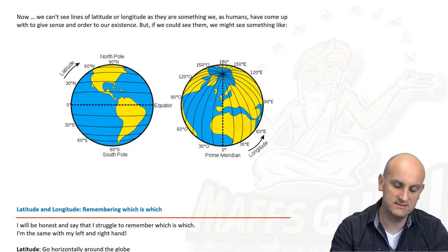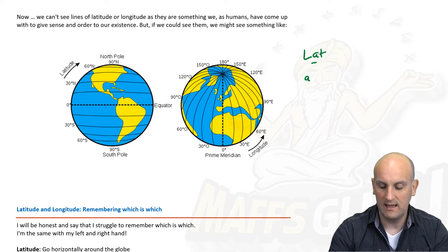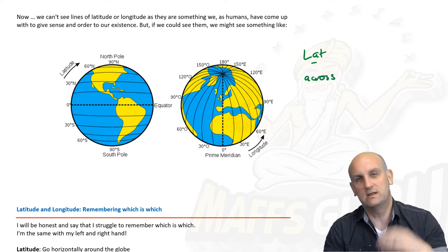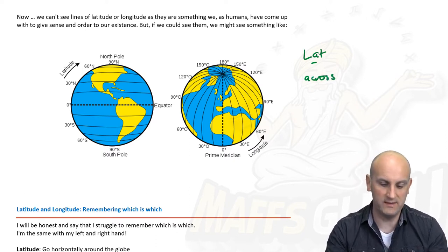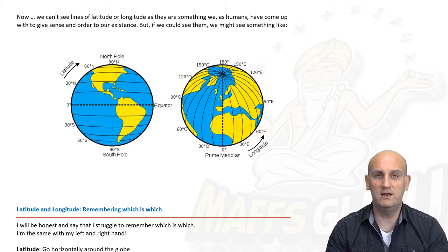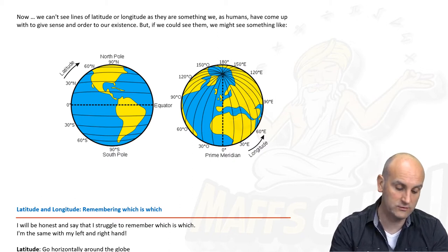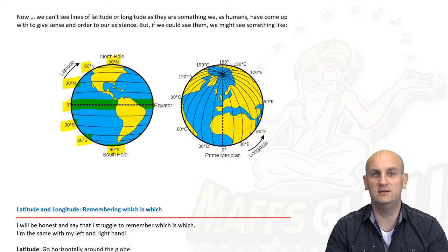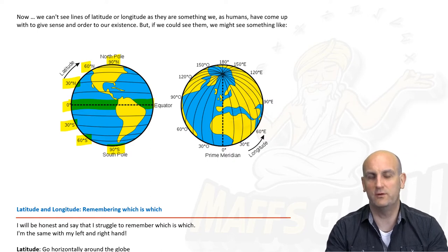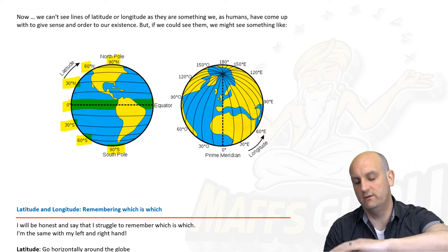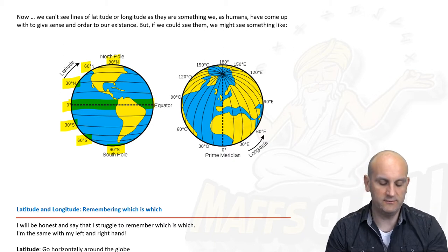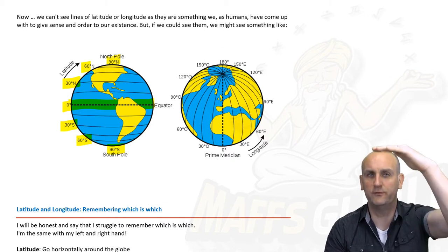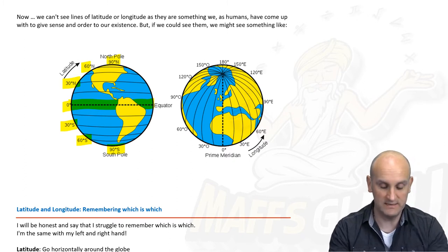The best way I can remember this is that latitude has an A, and A is a cross — that's how I try to recode it in my brain. These lines are really important and they are relative to the equator. Angles are allocated to each of these lines: 30 degrees north, 60 degrees north, 90 degrees north, and likewise 30, 60, and 90 degrees south. The equator is zero degrees. Those are latitude lines.